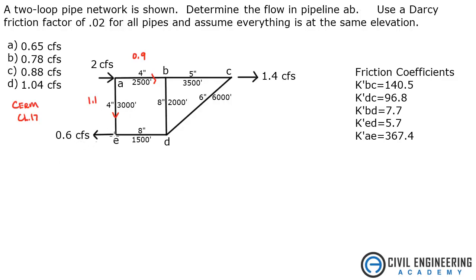We have 0.6 coming out at E, so I'll assume ED is 0.5 CFS going this way. At node B, we've got 0.9 coming in — I'll assume 0.3 is going through BD, which leaves 0.6 going through BC. At D, we've got 0.6 plus 0.5, so that's 1.1 going toward C. At point C, adding those two gives 1.4, which makes sense. You just guess those initial values.